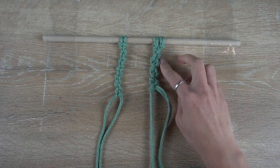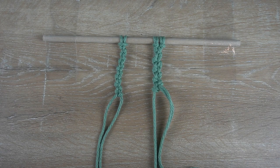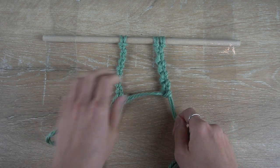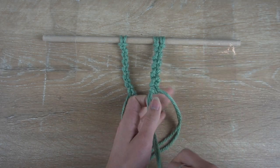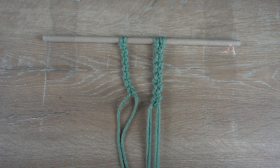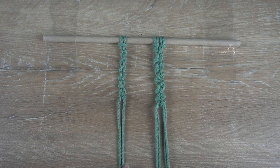Make sure to check the video description below for more recommended knot tutorials and DIY projects. And these are two ways to make an alternating half hitch knot chain. I hope you guys enjoyed this and I'll see you guys next time. Thanks for watching.